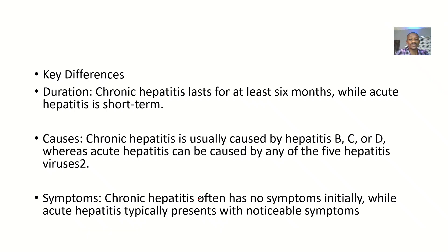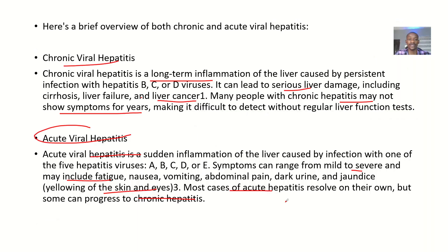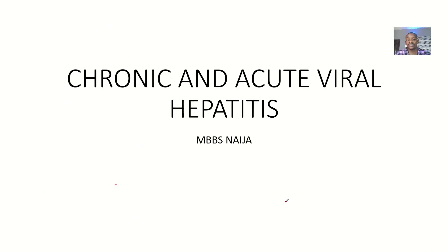The key differences are basically the duration and the types of virus that can cause it. Chronic hepatitis lasts for at least six months, while the acute one is short term. Chronic hepatitis is usually caused by hepatitis B, C, and D, while acute is caused by all types. Chronic hepatitis often shows no symptoms initially, while acute will always start with noticeable symptoms.